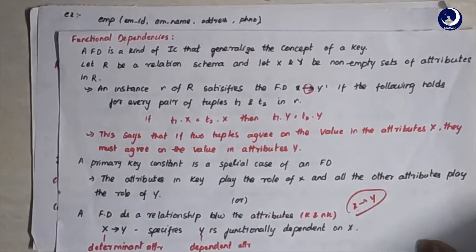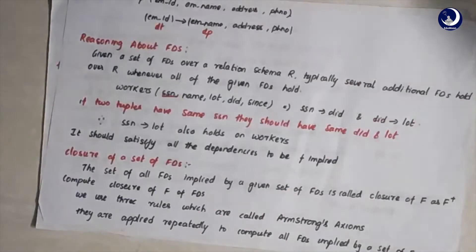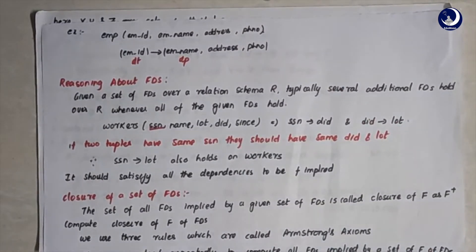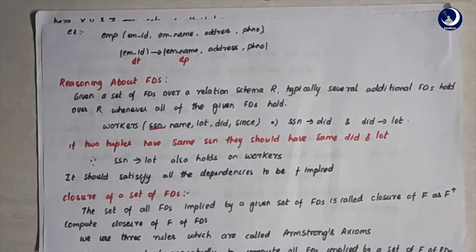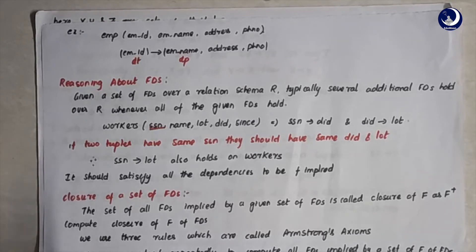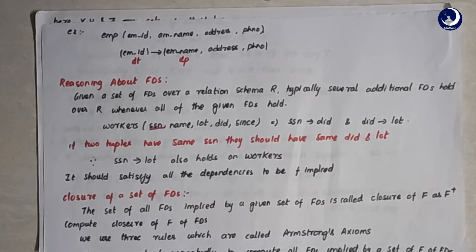Here's a simple example using an employees table with four columns: employee ID, name, address, and phone number. X is the key attribute — employee ID — and Y is all the dependent columns. You can also take the combination of employee ID and name as X. Now that we know what functional dependencies are, let's understand the reasoning about functional dependency.